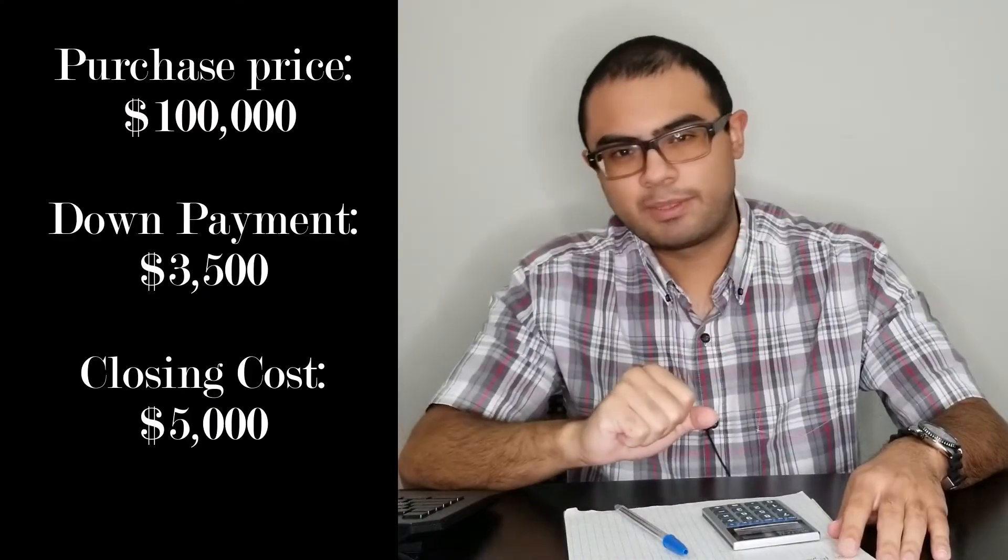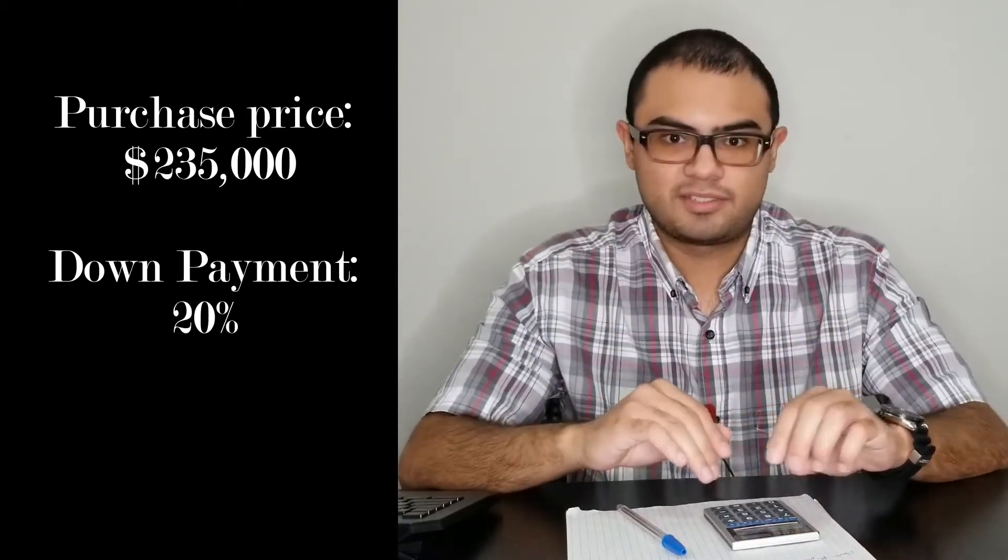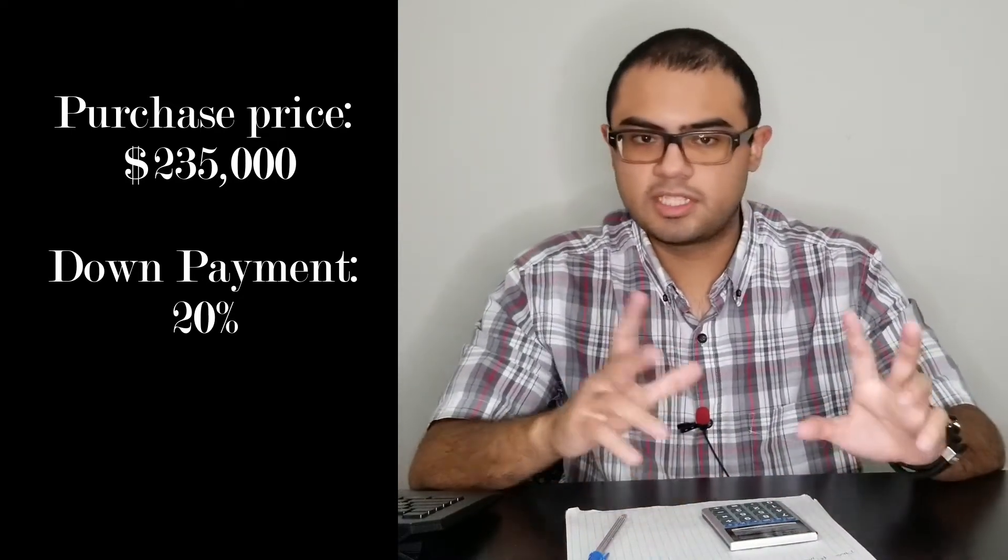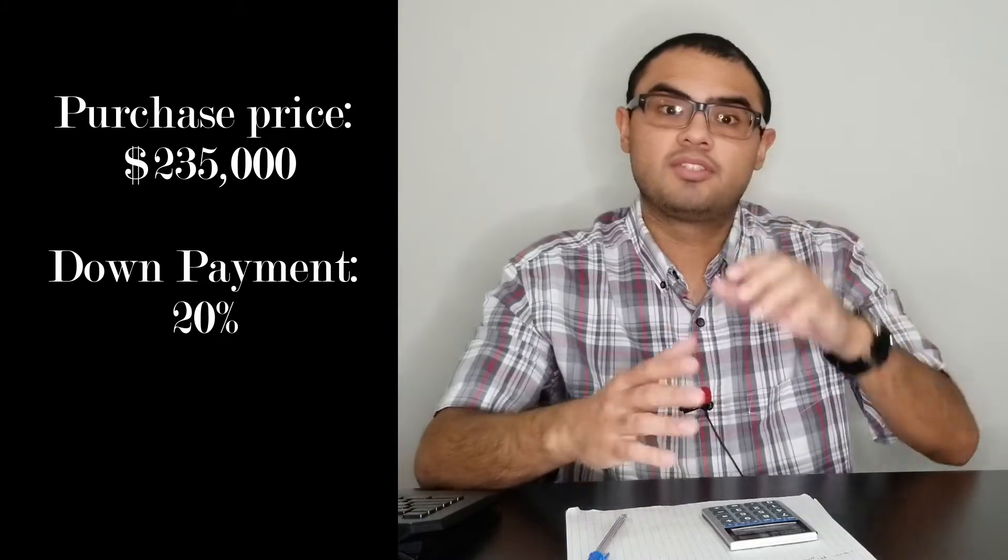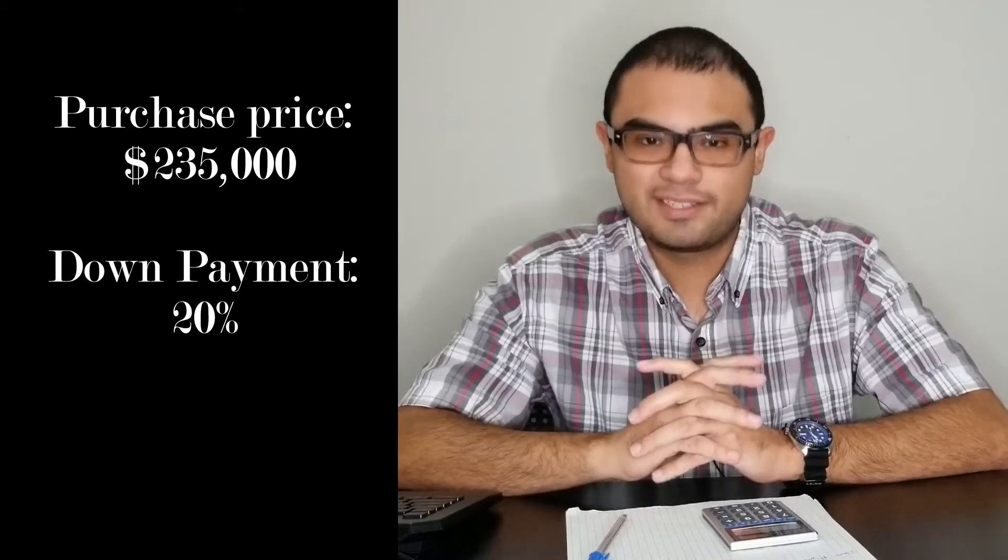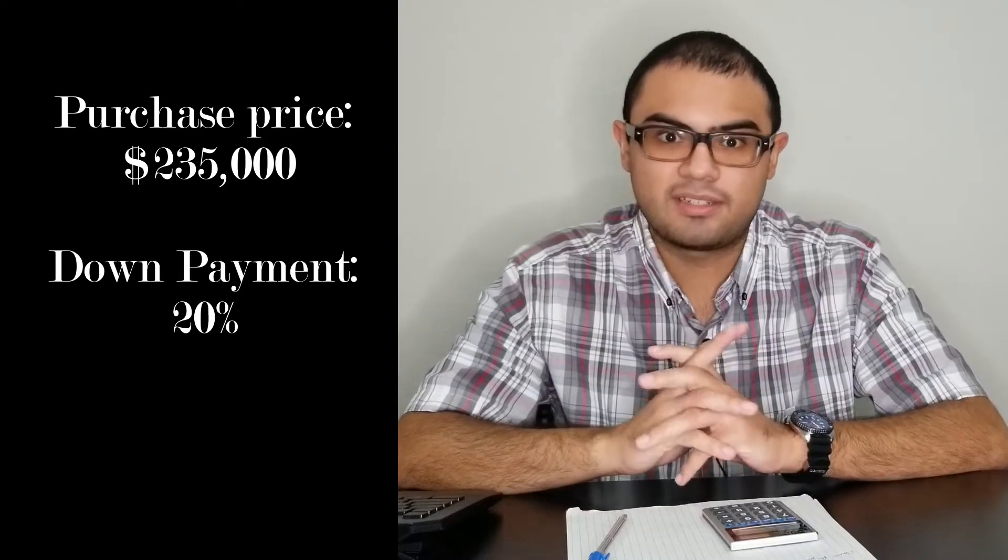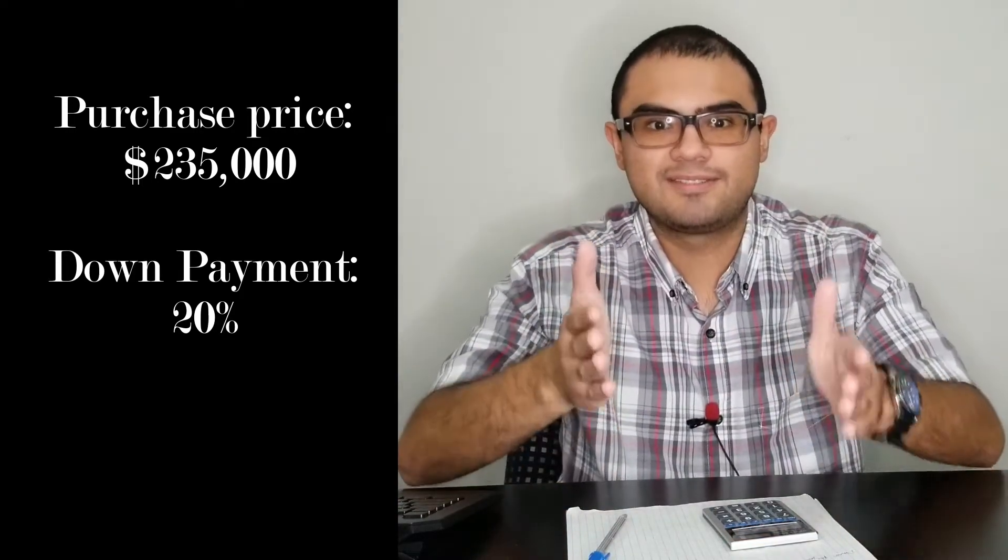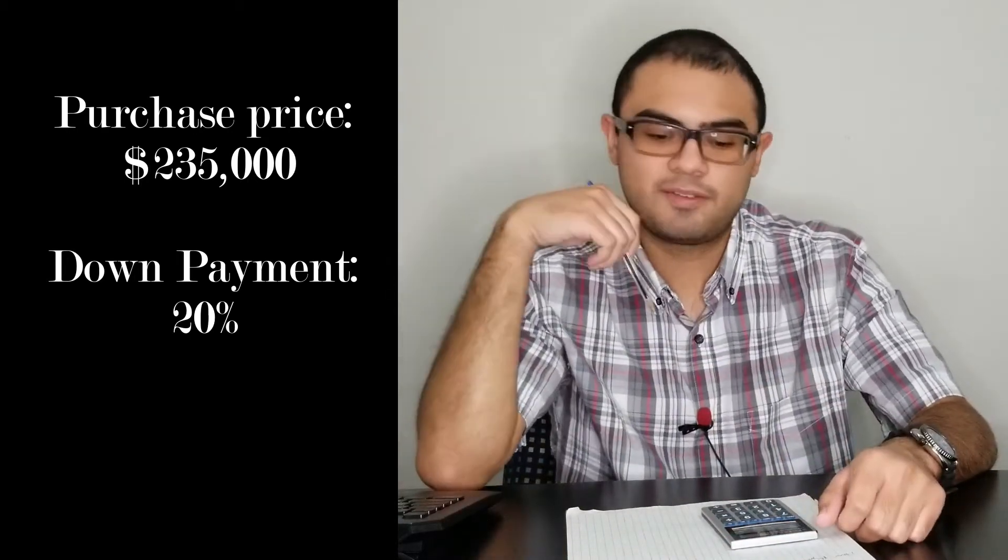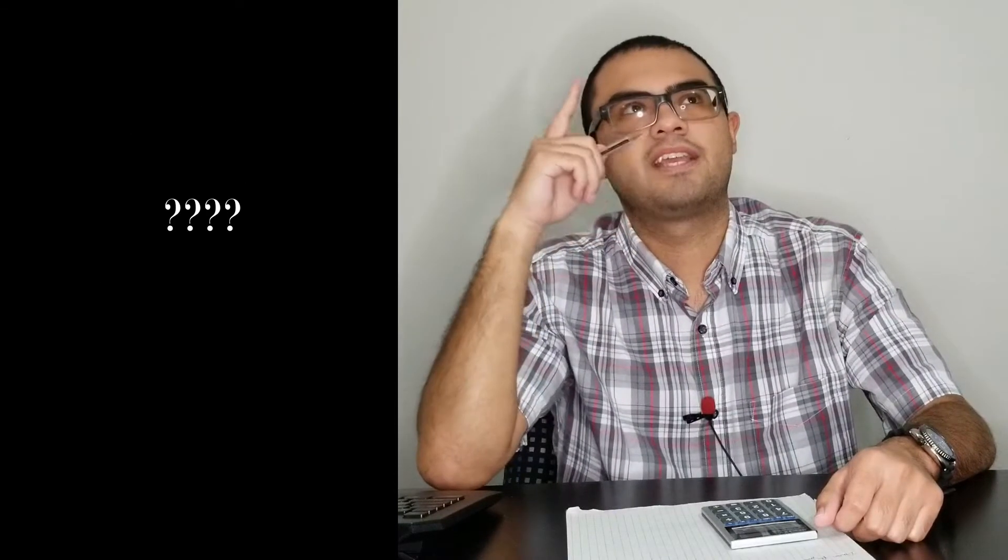Let's go ahead and jump up a little bit. Let's say you got approved for a $235,000 house. Same thing, let's spice it up a little bit. Let's say you need to put 20% down. Now we're going to get a little bit more technical. We got to put 20% down, it's a $235,000 house. How much down do you need to put?